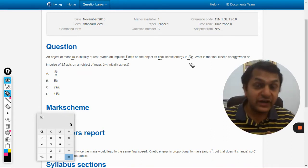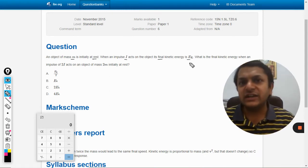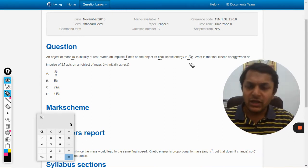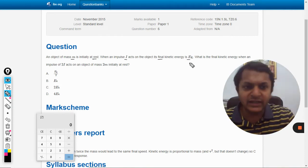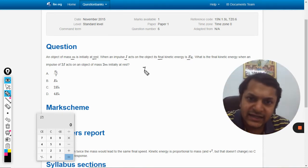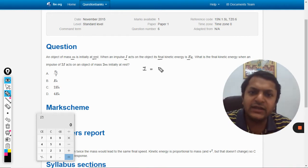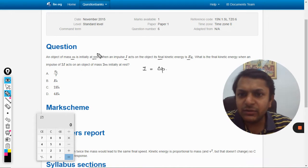Now that's different because we have studied the impulse momentum theorem. The impulse momentum theorem directly relates impulse and momentum by the formula: impulse i will be equal to the change in momentum.